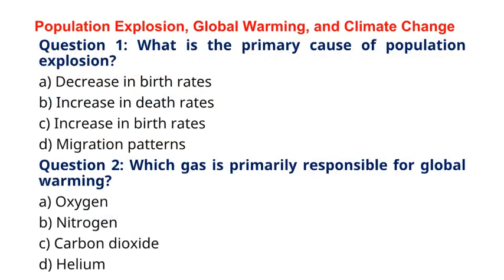Question 1: What is the primary cause of population explosion? A. Decrease in birth rates. B. Increase in death rates. C. Increase in birth rates. D. Migration patterns. The correct answer to question 1 is option C: Increase in birth rates. Explanation: Population explosion occurs when birth rates surpass death rates, leading to a rapid increase in population size.